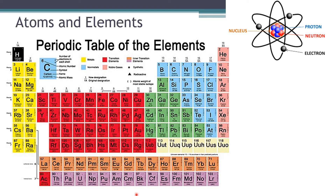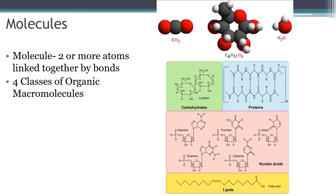To make a molecule you bind two or more atoms together by chemical bonds. Molecules in the human body range in size from very small — like oxygen, which is just two oxygen atoms linked together — to very large, like lipids and proteins. Proteins can have up to 10,000 amino acids linked together, so these molecules can be very, very large.